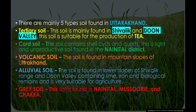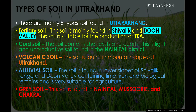There are mainly five types of soil found in Uttarakhand. First, tertiary soil, mainly found in Shivalik and Doon Valley, suitable for tea production. Second, quartz soil, containing shell casts and quartz, is light and unproductive, found in Nainital district. Third, volcanic soil, found on mountain slopes. Fourth, alluvial soil, found in the lower slopes of the Shivalik range and Doon Valley, containing lime, iron, and biological remains — very suitable for agriculture.